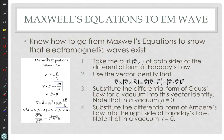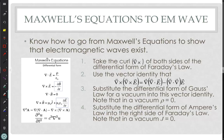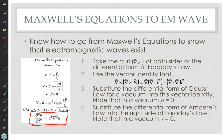Now this is complicated. You have those four steps and you have a mathematical identity. Obviously if I were to give you this, I'd give you that mathematical identity - I wouldn't expect you to memorize it. The process we went through in class was how to take Maxwell's equations and get to this equation here, which is the wave equation.